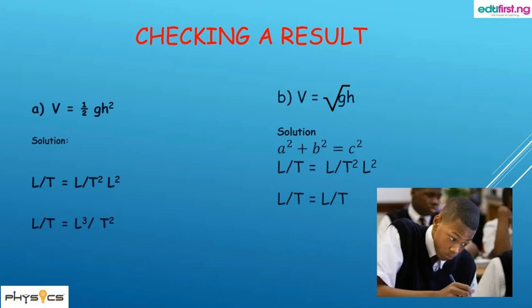Now looking at the second equation: V = √(gh). Velocity is L/T on the left-hand side. On the right-hand side, g is L/T² and h is L, giving √(L²/T²). Taking the square root, we get L/T. Since the left-hand side equals the right-hand side, the dimensions match and this could be a valid formula.